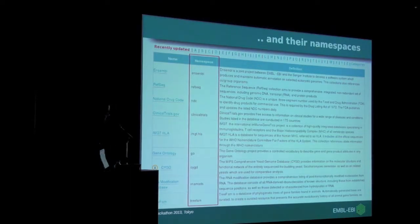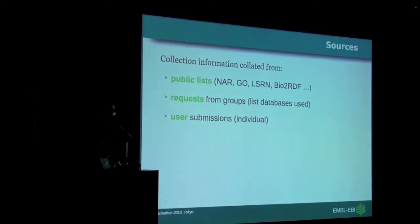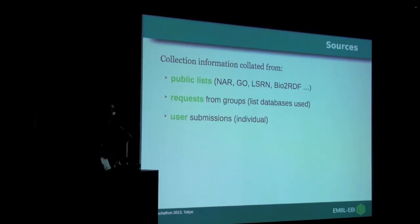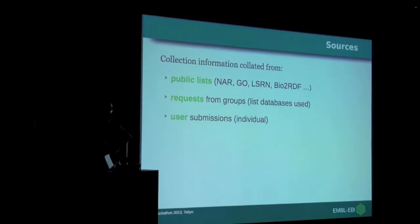Some of those I'll be releasing over the course of this BioHackathon. We populate our registry from a number of different sources — various public lists. Resources like Gene Ontology and UniProt provide cross-reference lists for the sources they reference. Also the NAR database issue, and other registries such as LSRN, which we worked on previously with Mark Robinson, and Bio2RDF, which we're working on currently with Bermichoke Morty. We also get requests from groups who want their data available through Identifiers.org URIs, and from user submissions where someone sees something they want and submits a request to us.